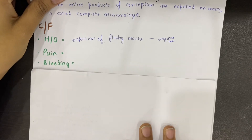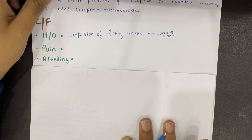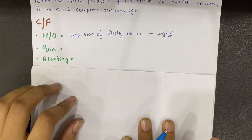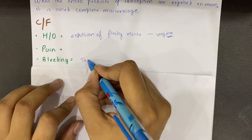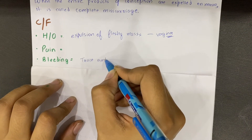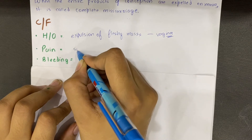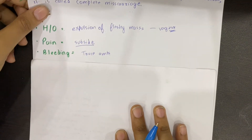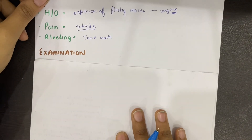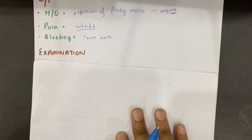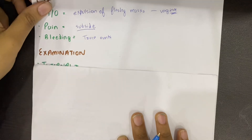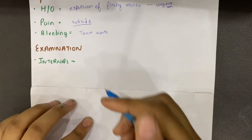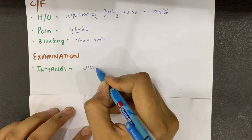The other symptoms associated with the miscarriage, whether bleeding or pain, have now subsided. Bleeding may still be present but only in trace amounts, and the pain has also subsided. Internal examination is necessary in this case to assess the uterus size, which is markedly reduced.